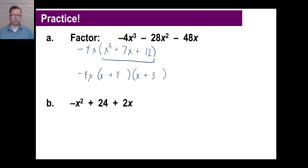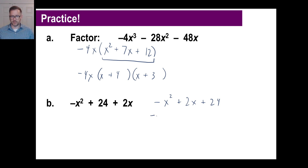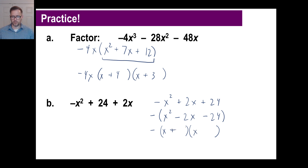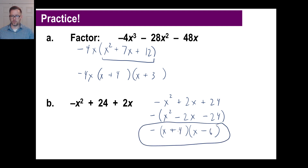Now try problem B. I'll put this in order: negative x² plus 2x plus 24. We divide by negative 1 because we don't want the first term to be negative. We get x² minus 2x minus 24 — keep the minus sign outside. Now two binomials: the product is negative so one is plus and one is minus. What two numbers multiply to negative 24 and add to negative 2? Positive 4 and negative 6. So the answer is negative 1 times (x + 4)(x − 6).